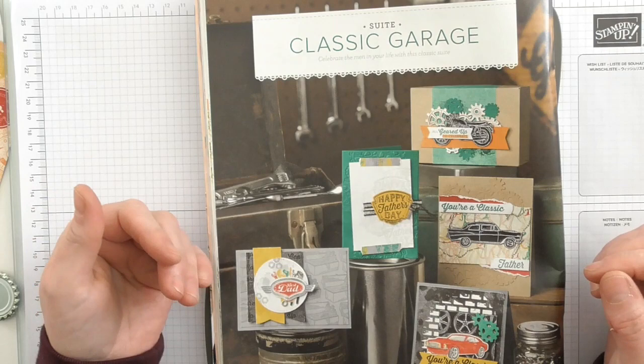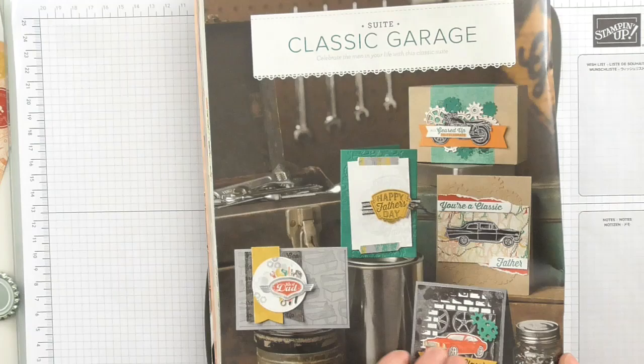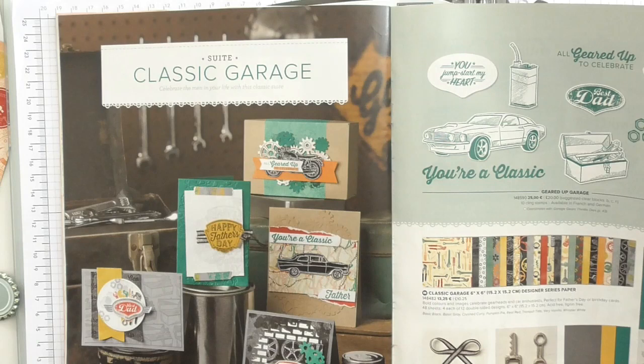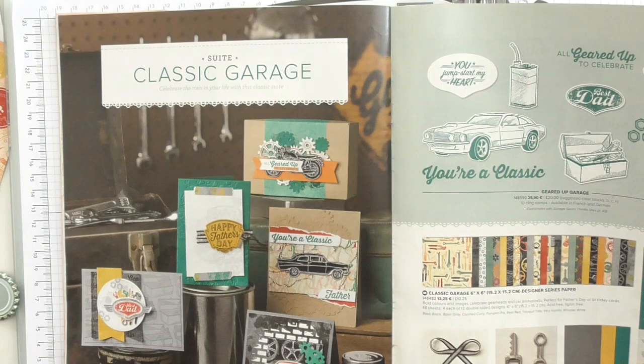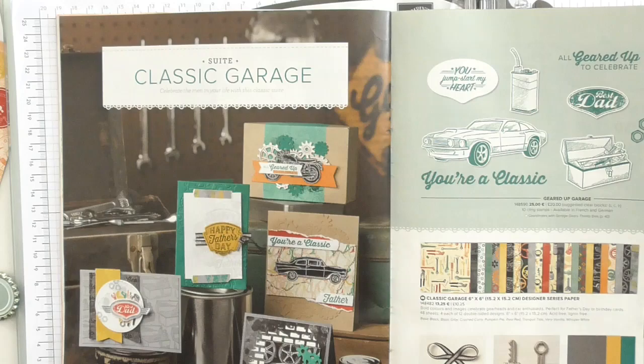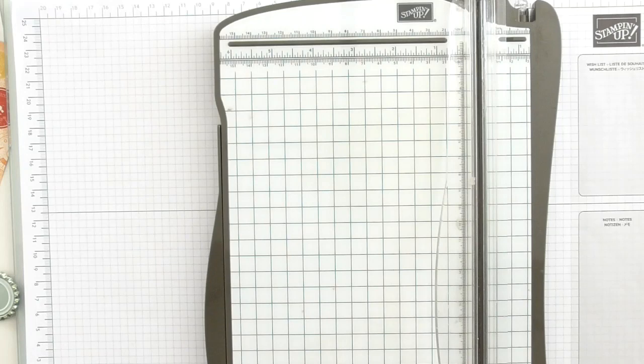Stampin' Up has the Classic Garage suite. It's in the spring summer catalogue and is available right until June on pages 42 and 43. We've got an awesome array of goodies there to create all your male themed cards. There are cogs to cut out, keys, spanner metal elements, a stamp set, paper, the lot. Go and have a look.